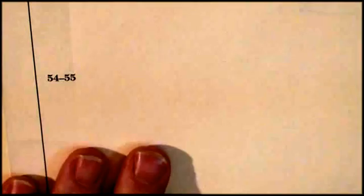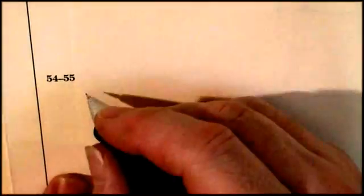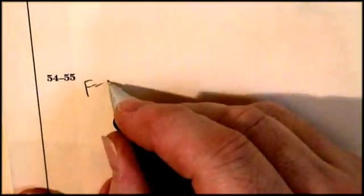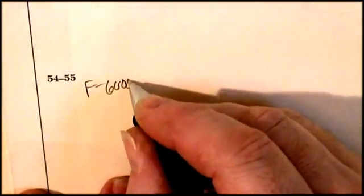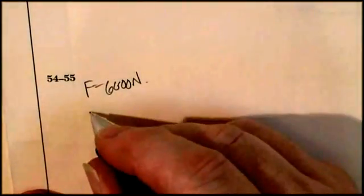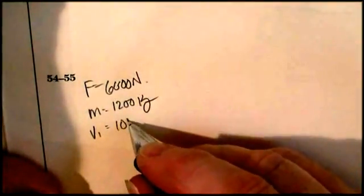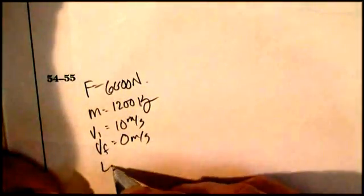All right, well let's see what do I have here. I've got a force of 6,000 Newtons, I've got a mass of 1,200 kilograms, I've got a velocity initial of 10 meters per second, velocity final of zero meters per second, and I'm looking at time. And I'm stopping something, so I'm thinking this is going to be an impulse type of question.